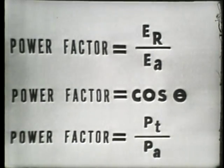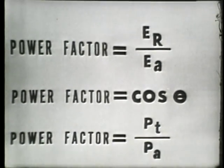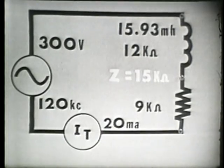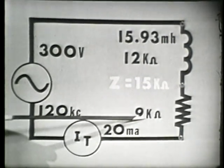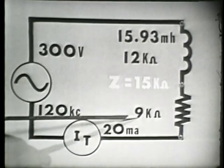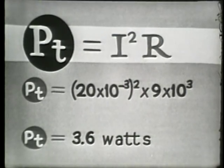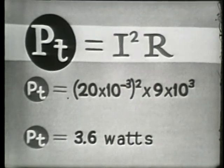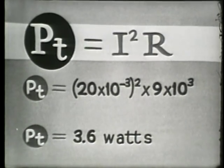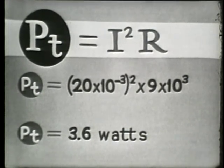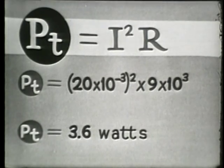Another commonly used ratio to determine power factor is true power divided by apparent power. True power is the power actually being used up or dissipated in our circuit. Since the resistance — our 9 K ohms — is the only component capable of actually dissipating power, true power equals the current squared times that resistance. Substituting our values of 20 milliamps and 9 K ohms, true power is 3.6 watts.